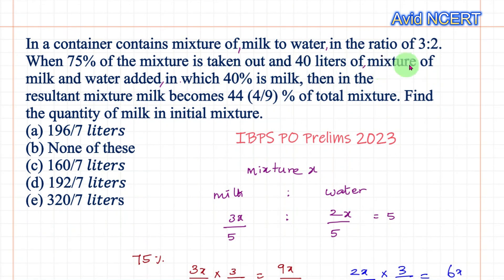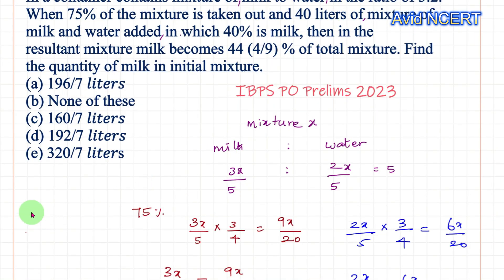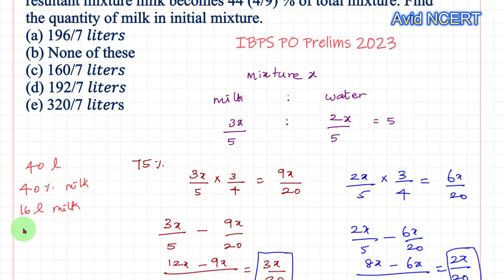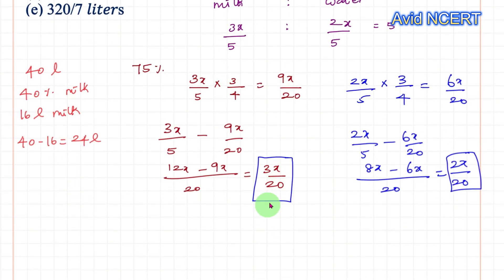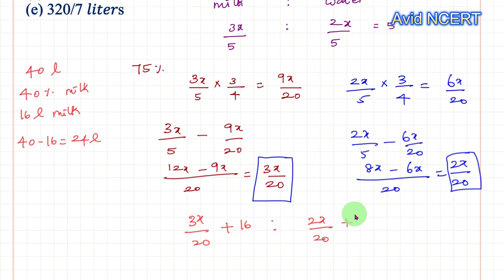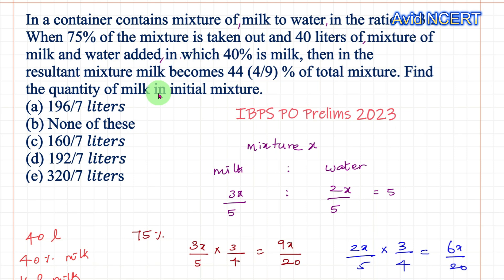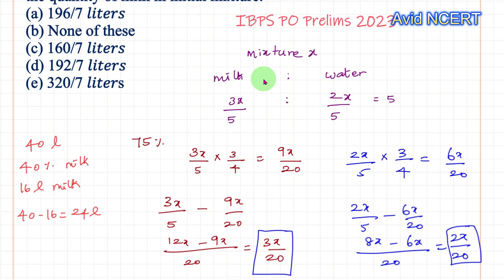Now, 40 liters of mixture is added, in which 40% is milk. So 40% of 40 liters = 16 liters of milk is added, and the remaining 40 minus 16 = 24 liters is water. So to the remaining milk of 3x/20 we add 16 liters, giving 3x/20 + 16. To the remaining water of 2x/20 we add 24 liters, giving 2x/20 + 24.